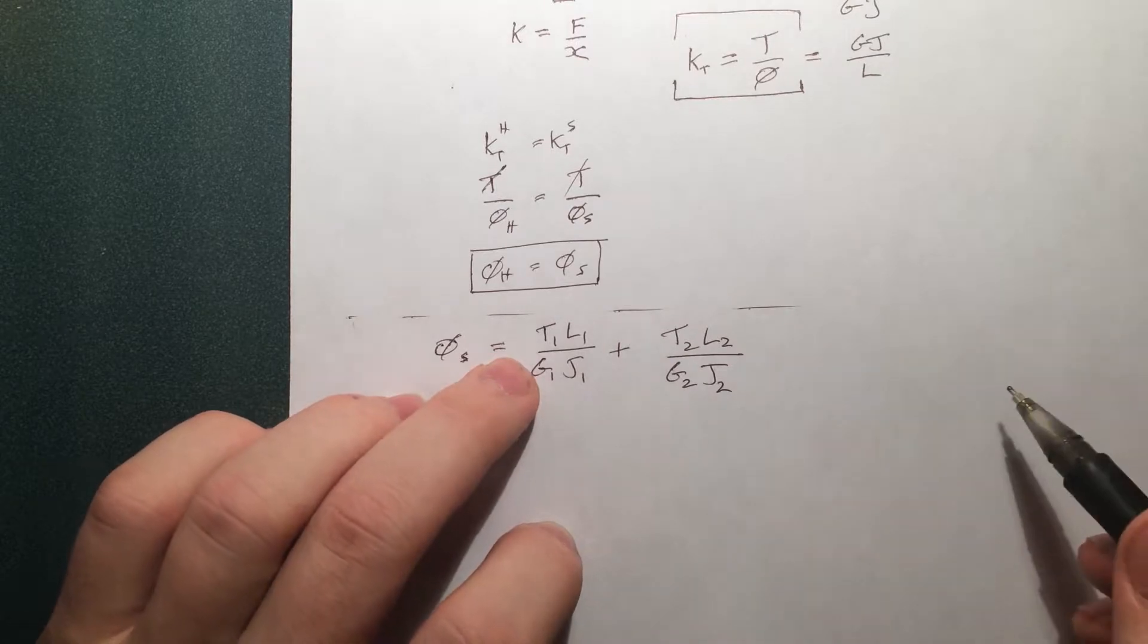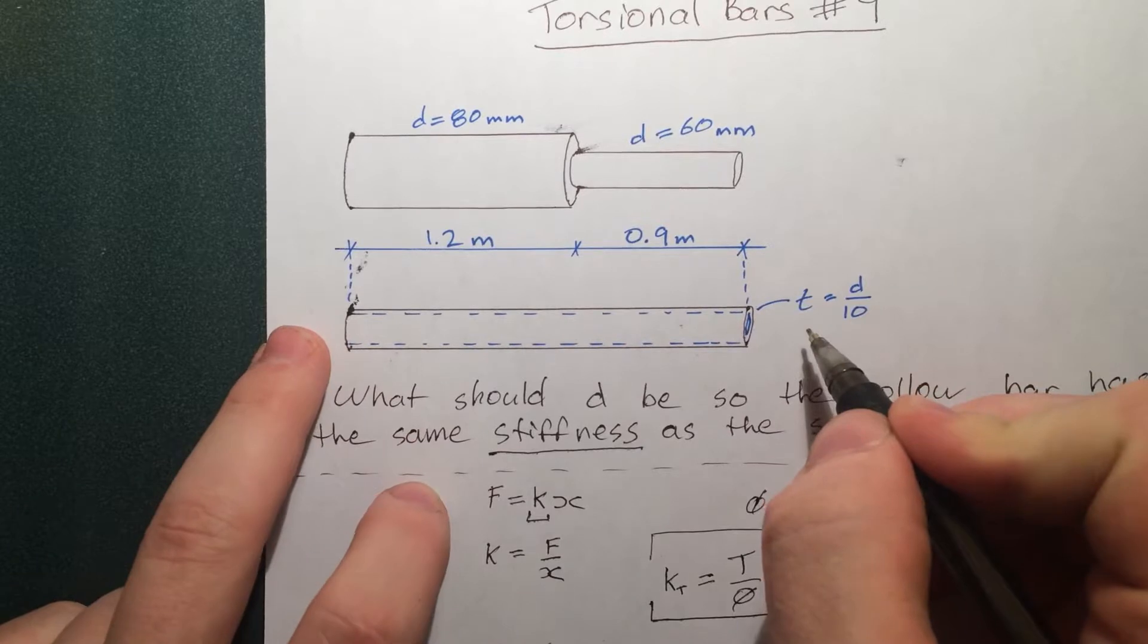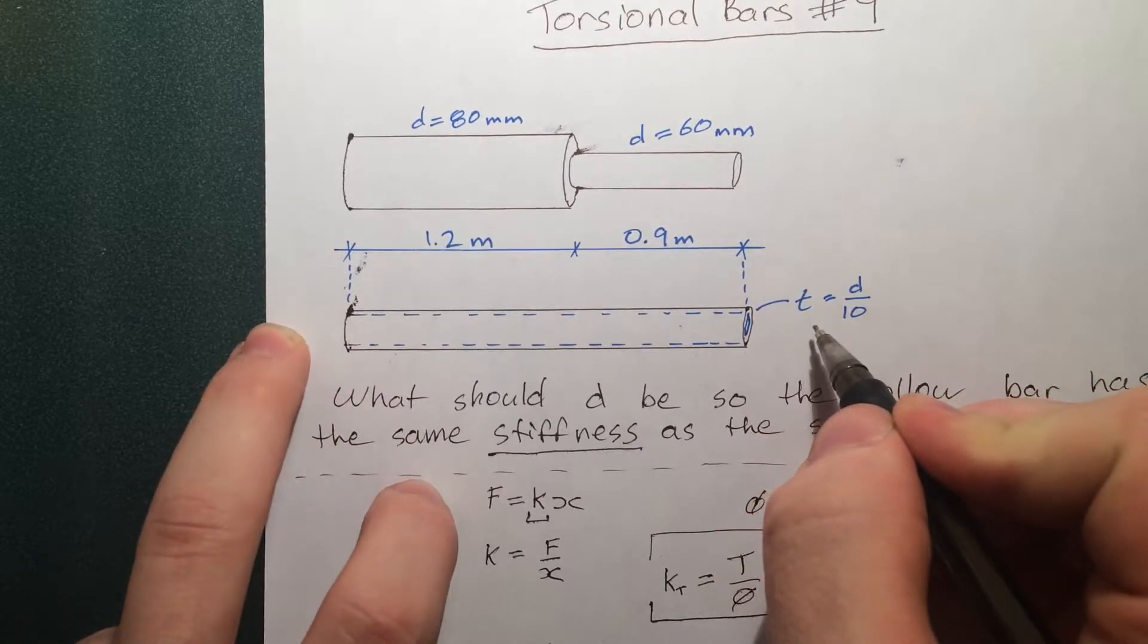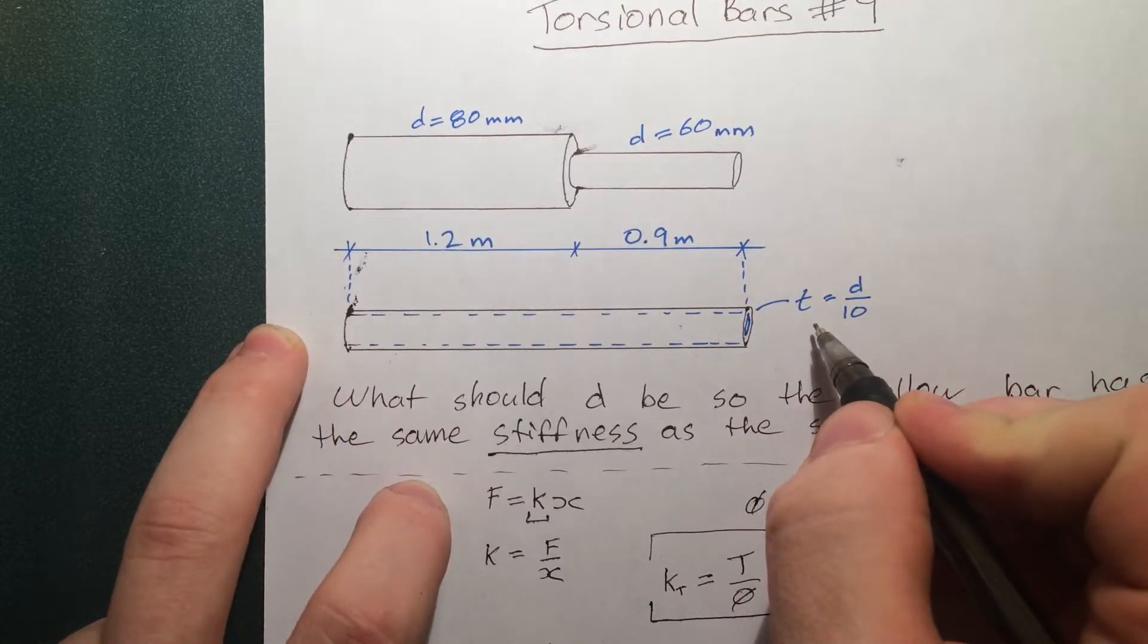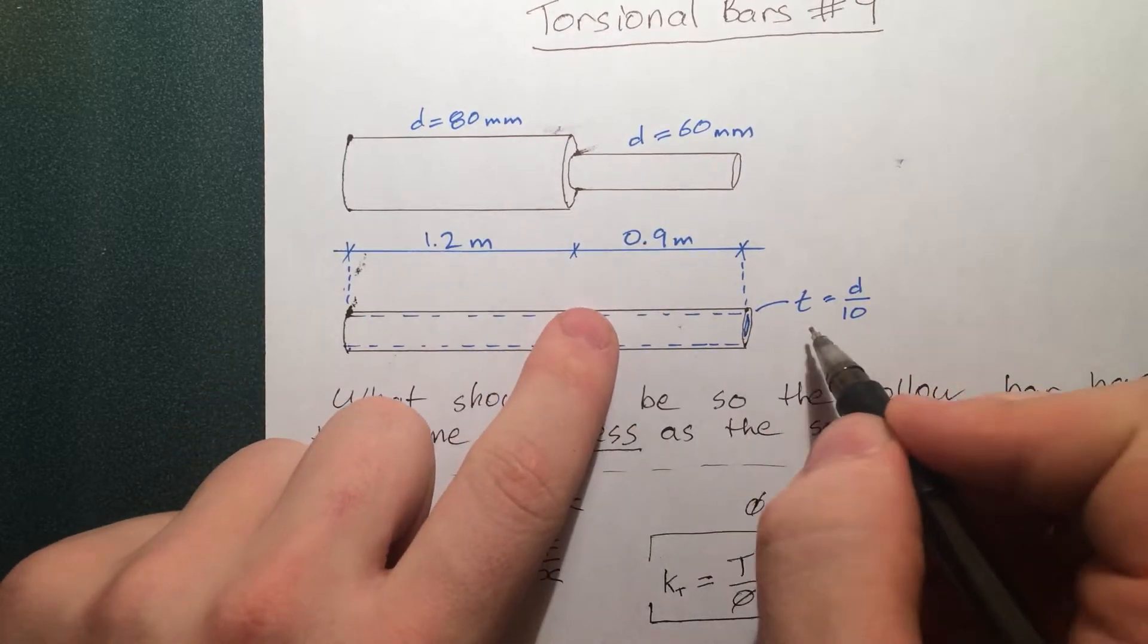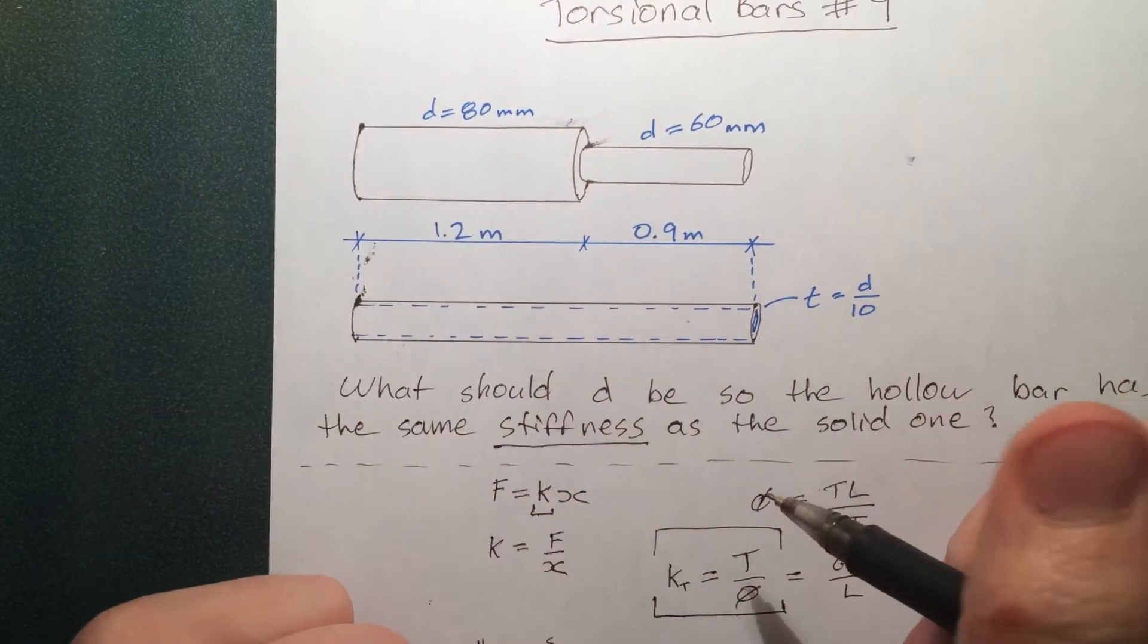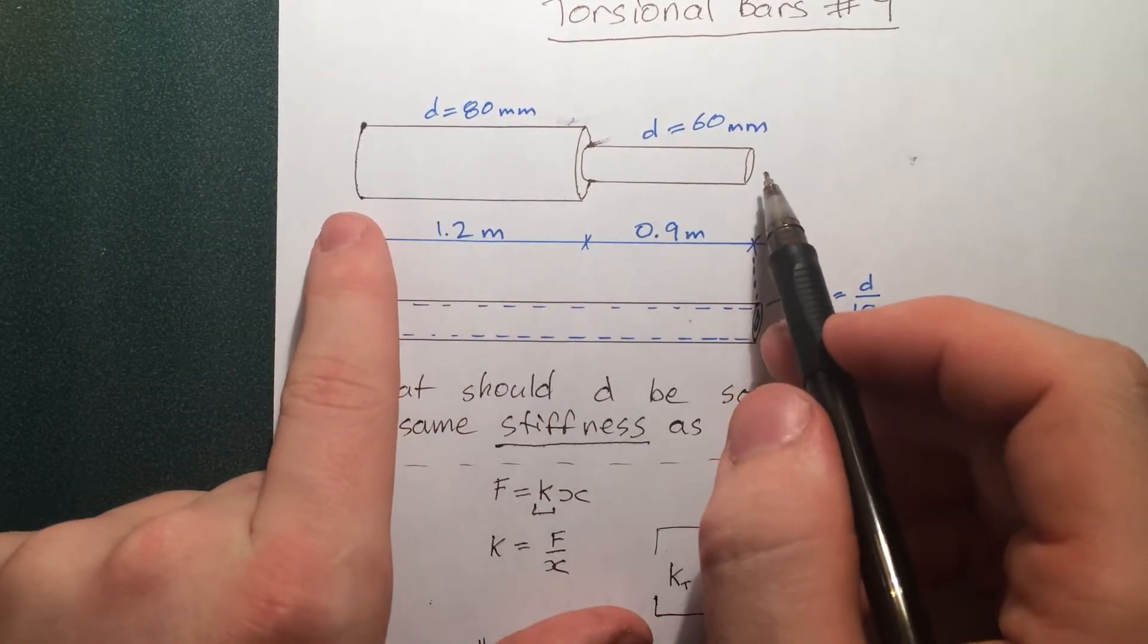So the first thing we'd do normally is go into a free body diagram. Well, let's just think about this. If we applied a torque here. And then, of course, you'd have to apply one here to keep equilibrium. What would be the internal reaction? It would be equal to the outside one. Imagine a free body diagram. Torque. Internal torque. Equals the outside one. Same thing for this bar.